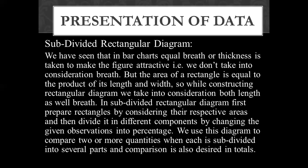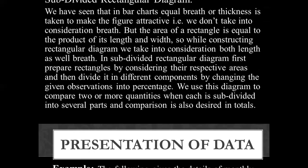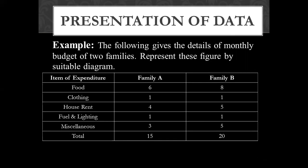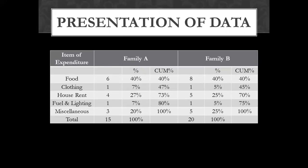We will show the values and quantities and compare them. The data includes food, clothing, fuel and lighting, and miscellaneous. We have family A and family B data, and we have been given the total data.